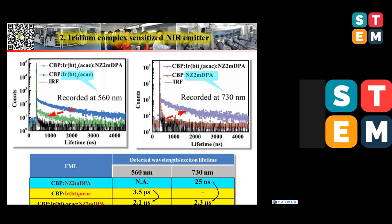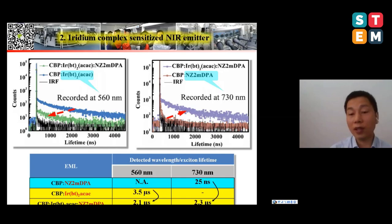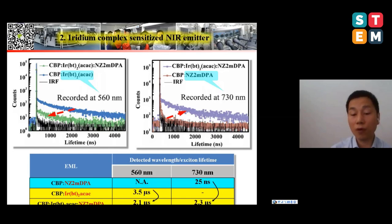From the time-resolved figure, we can see that the emission at the peak wavelength of 730 nanometers was delayed by introducing the iridium complex, because the iridium complex has a long delay lifetime at the microsecond scale. By introducing the iridium complex into the host-guest system, we can see that at 730 nanometers, the exciton lifetime was increased from 20 nanoseconds to 2.3 microseconds.